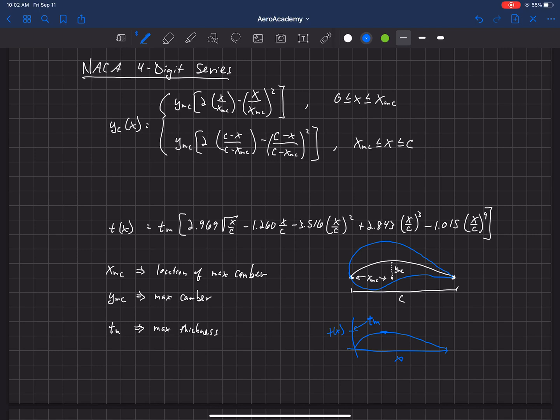So the NACA four-digit series uses these equations for the camber line and the thickness. But you can define a whole different family of airfoils, because you can change the values of the location of maximum camber, the actual amount of maximum camber, and the maximum thickness on the airfoil. And those values are defined from these four digits.